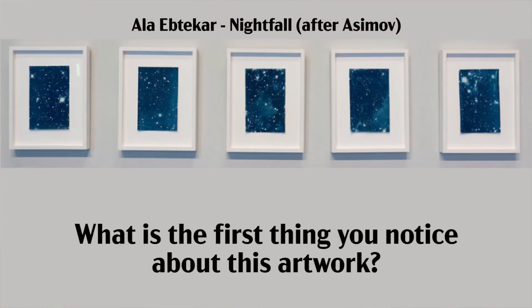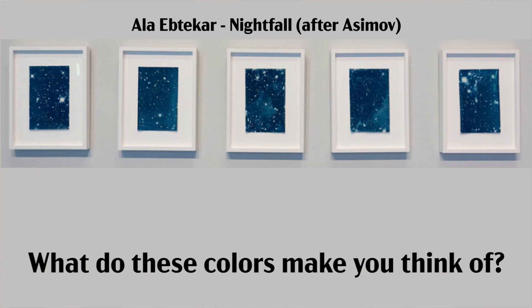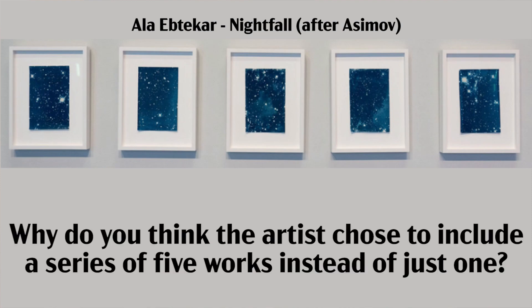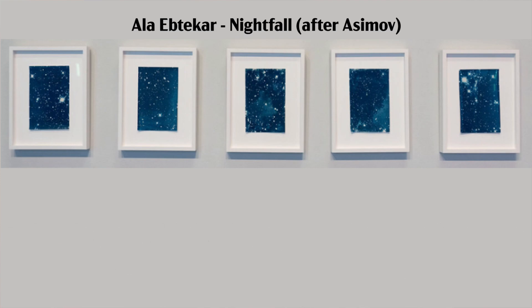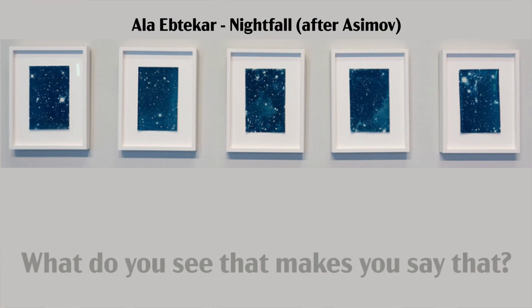Welcome back, I hope you enjoyed your trip to outer space again. So did you get a good look at Ala Ebtikar's work Nightfall? Let's talk about his artwork a bit before we continue on and make our own versions in the form of our bubble galaxies. What is the first thing you notice about his artwork? What colors do you see? What do these colors make you think of? How do you think the artist made this work? Why do you think the artist chose to include a series of five works instead of just one? So the full title of this work is called Nightfall after Asimov. What does the title tell you about the work? What do you think this artwork is about? What do you see that makes you say that?